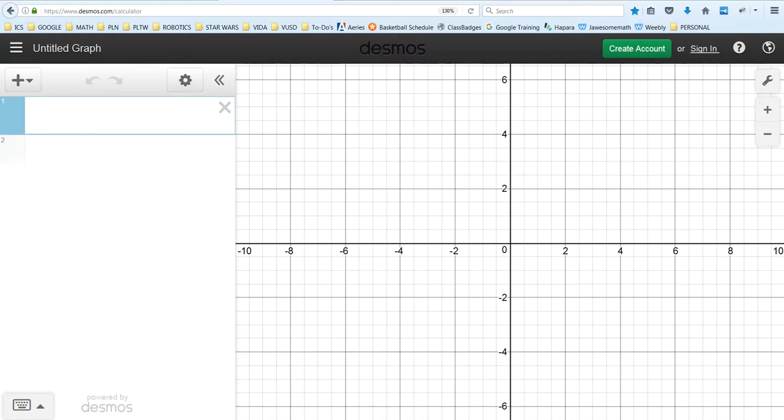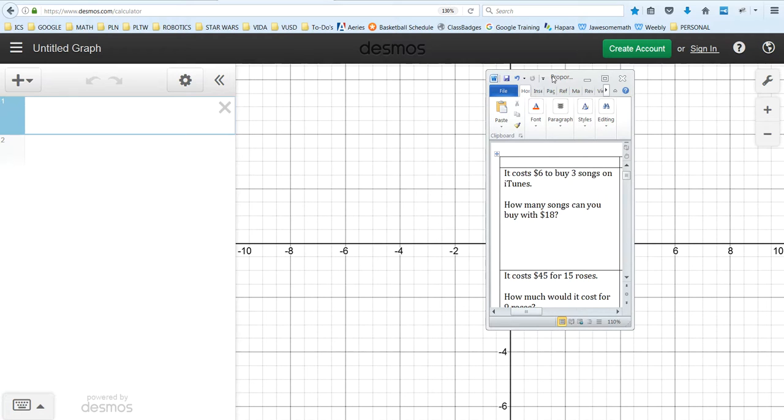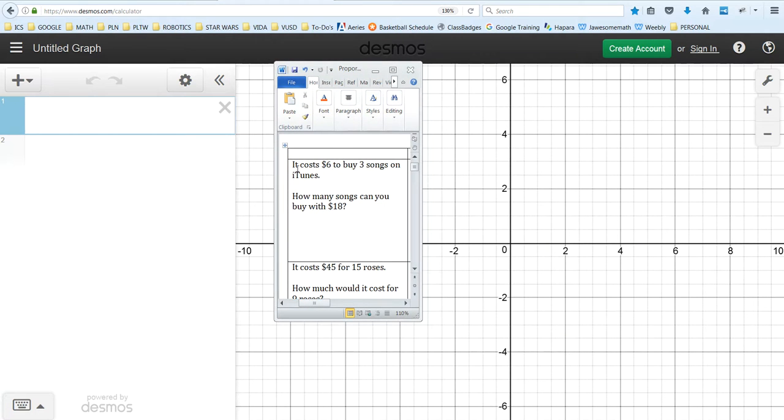We're given a problem. It costs $6 to buy three songs on iTunes. How many songs can you buy with $18? So we've got dollars and songs.